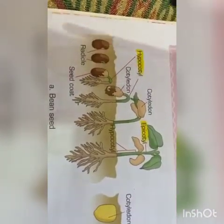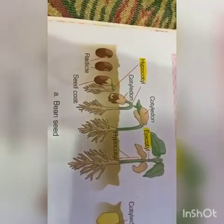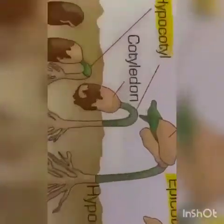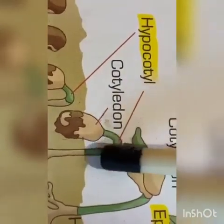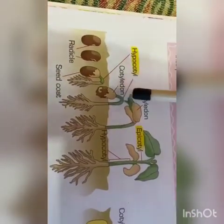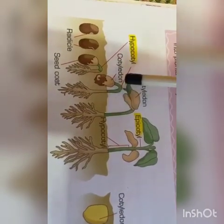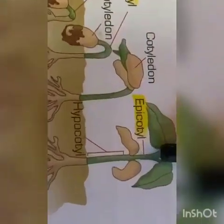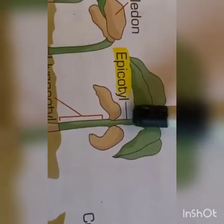We still have to see two more terms: epicotyl and hypocotyl. Hypocotyl is the portion of the embryo or seedling below the cotyledons. You can see this portion here — the part below the cotyledons is called hypocotyl, and the portion above the cotyledons is called epicotyl.